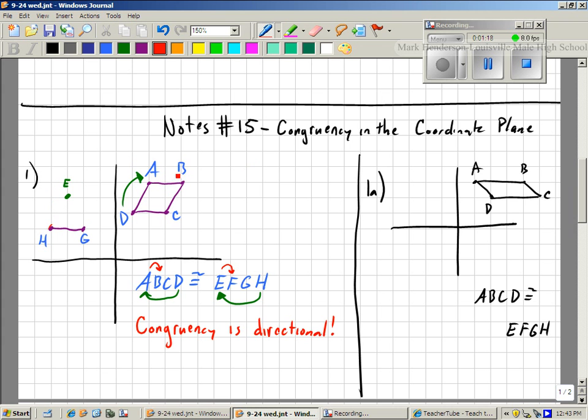Then A goes to B the same way E goes to F. So A goes to the right two. F goes to the right two.